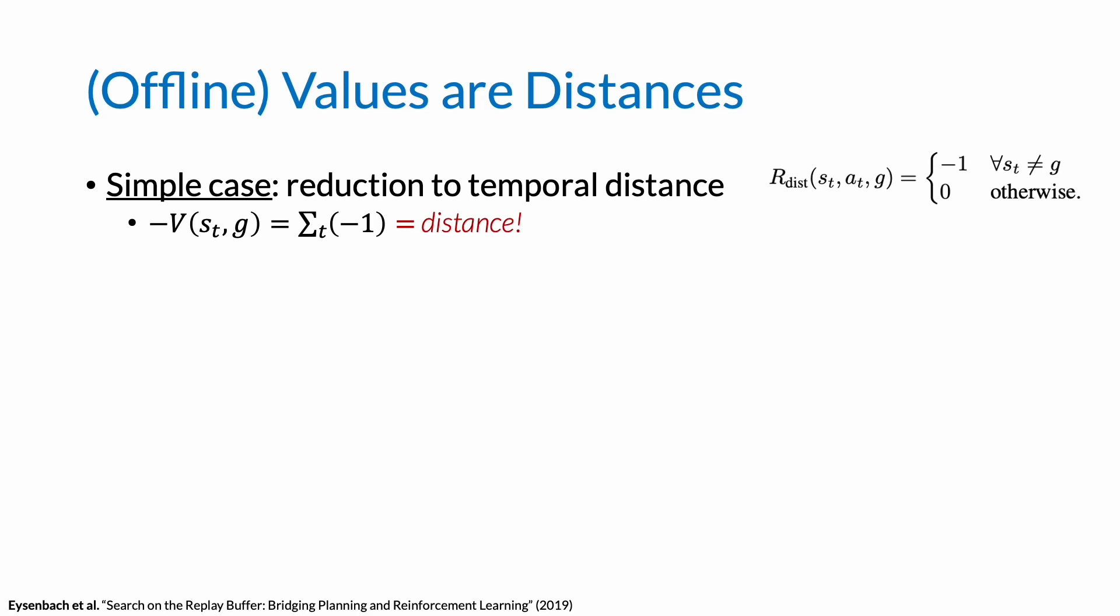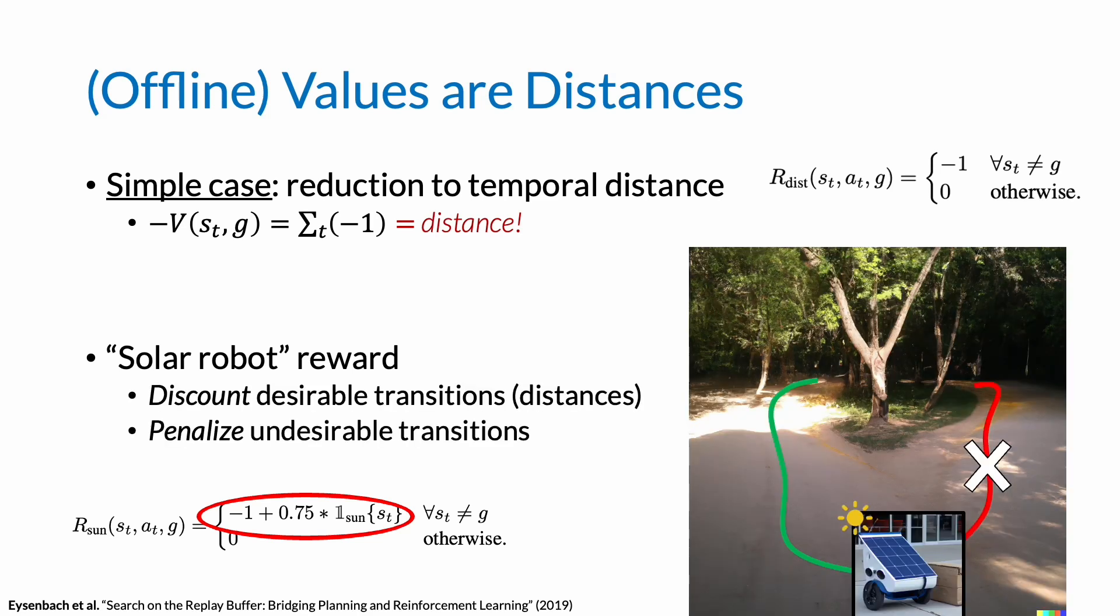But this equivalence gives us more flexibility. We can now design rewards for, say, a solar robot, which can be seen as discounting the amount of time spent in the sun, which is a desirable transition. This reward function would thus encourage the robot to take detours from the shortest path if it can spend more time in the sun and maximize the specified reward. Similar functions can be constructed for behaviors such as staying on pavement, driving in the grass, among other tasks.